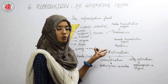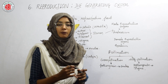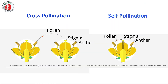Pollination can be carried out through agents like air, insects, or water. Air, water, and insects help in the transfer of pollen grains to the stigma. After the pollen grains are transferred to the stigma, fertilization can take place.